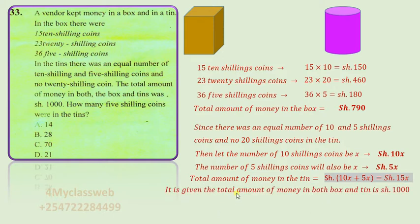Now, it is given that the total amount of money in the box plus the tin is 1000. Then we need to form an algebraic equation that will help us get the value of x.